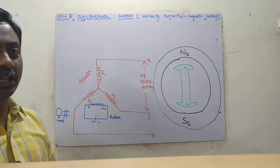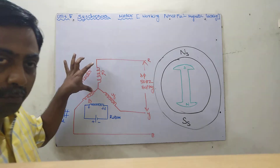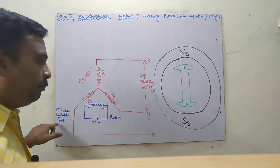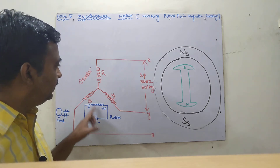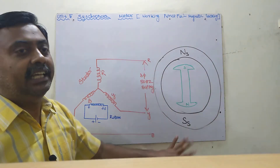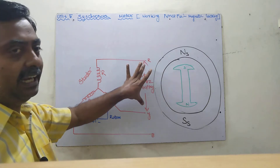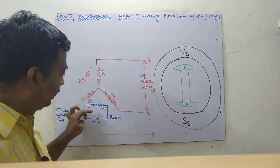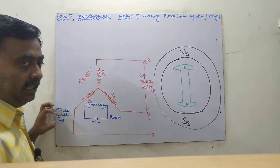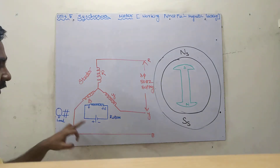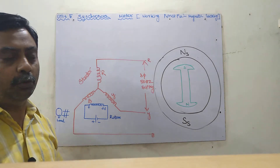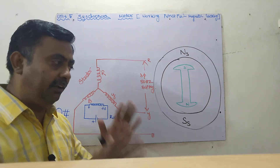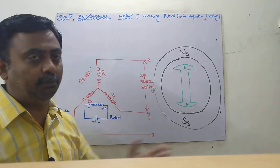Constructionally, synchronous motor and synchronous generator are the same. The stator is the armature and the rotor is the field. In a synchronous generator, we move the rotor using a prime mover, which changes flux and generates EMF, and we extract electrical energy. In a synchronous motor, we give three-phase supply to the armature and accept rotating mechanical energy as output. Practically, a synchronous generator can be used as a synchronous motor and vice versa.